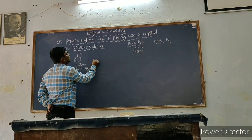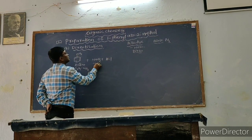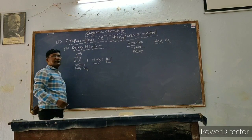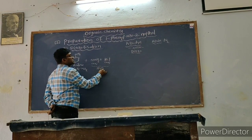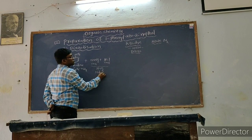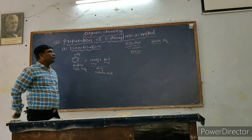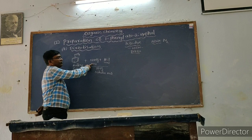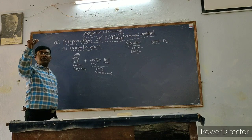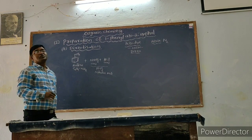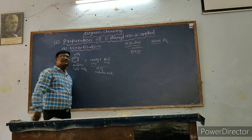Nitrous acid is prepared by mixing sodium nitrite with HCl solution. Nitrous acid is unstable, so we prepare it in the lab whenever we require it. We have to take the HCl solution in another test tube and cool them, maintaining very low temperatures.